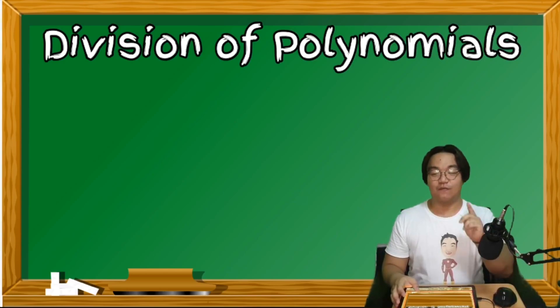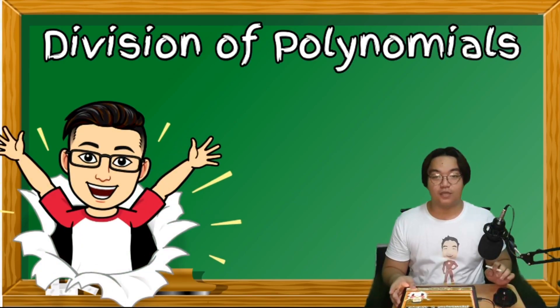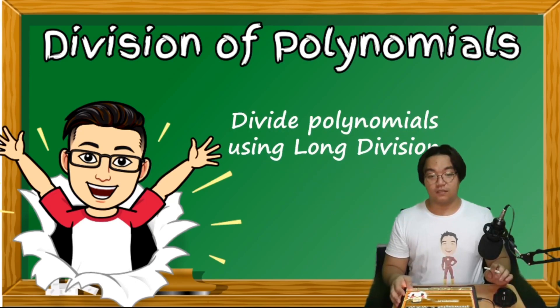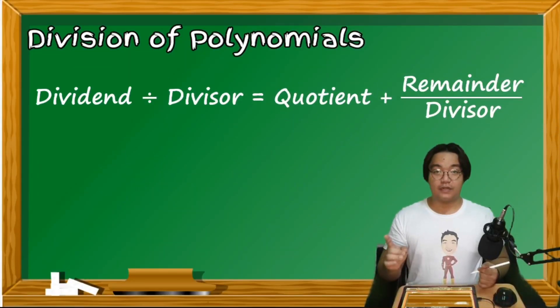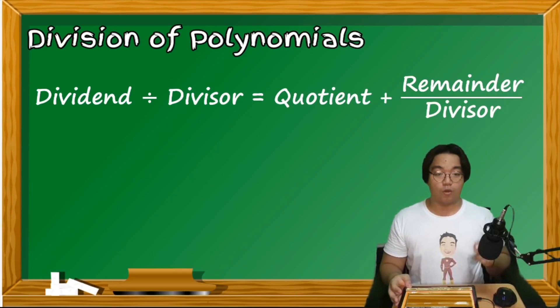For today's video we are going to talk about division of polynomials, and our focus would be the use of long division. If we recall the division algorithm: the dividend divided by the divisor is equal to the quotient plus the remainder over the divisor, because the remainder is less than the divisor.